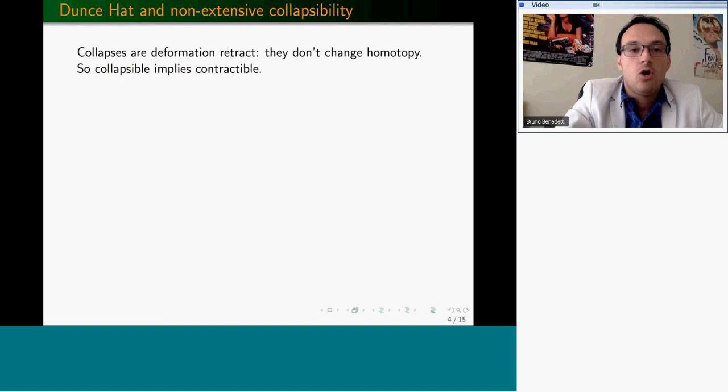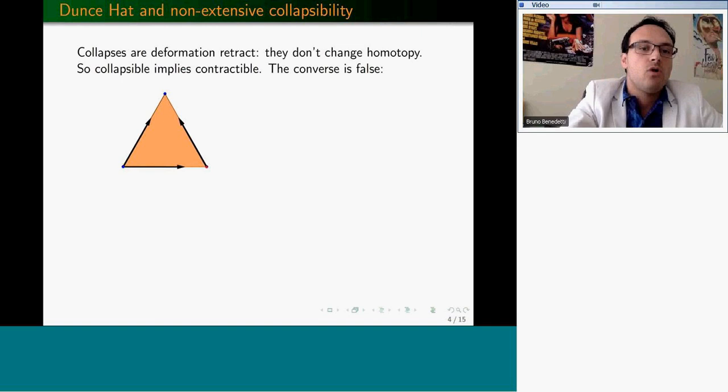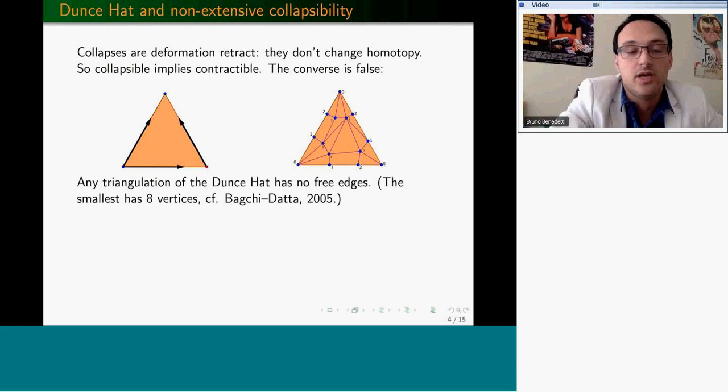If you proceed away with steps of this type and get to a point with some sequence, then the complex is called collapsible. The one on the left is collapsible. Each collapse is just making a little bit of a dent into your complex without changing its homotopy. So collapsible implies contractible.